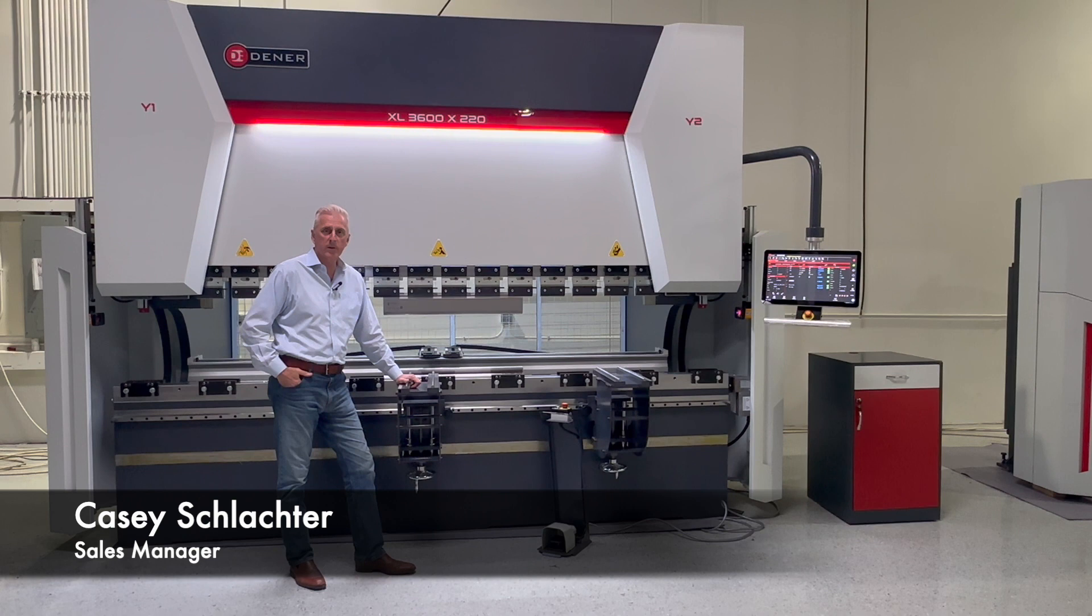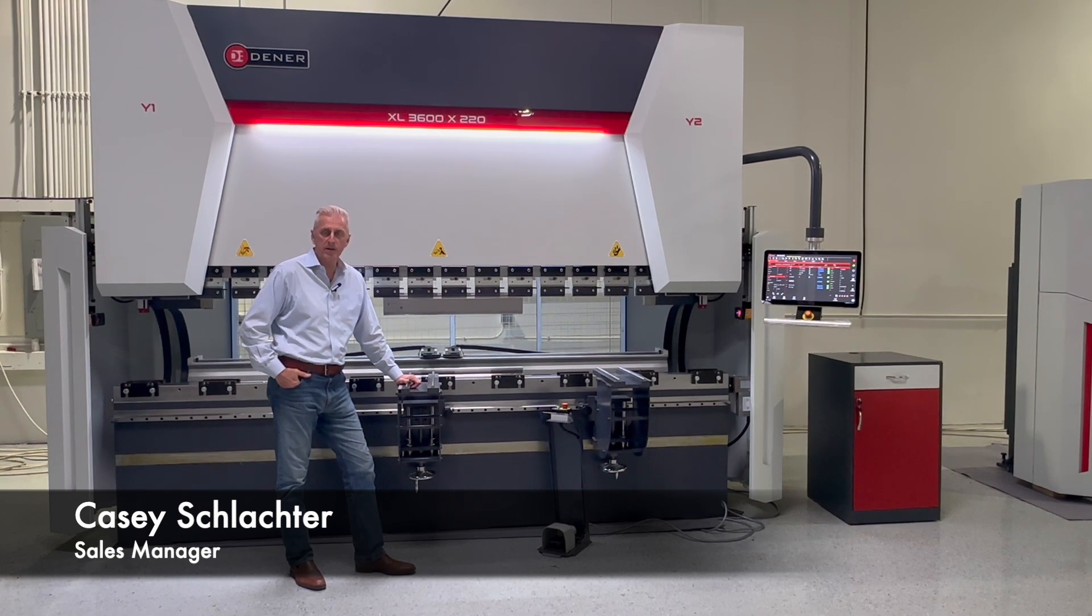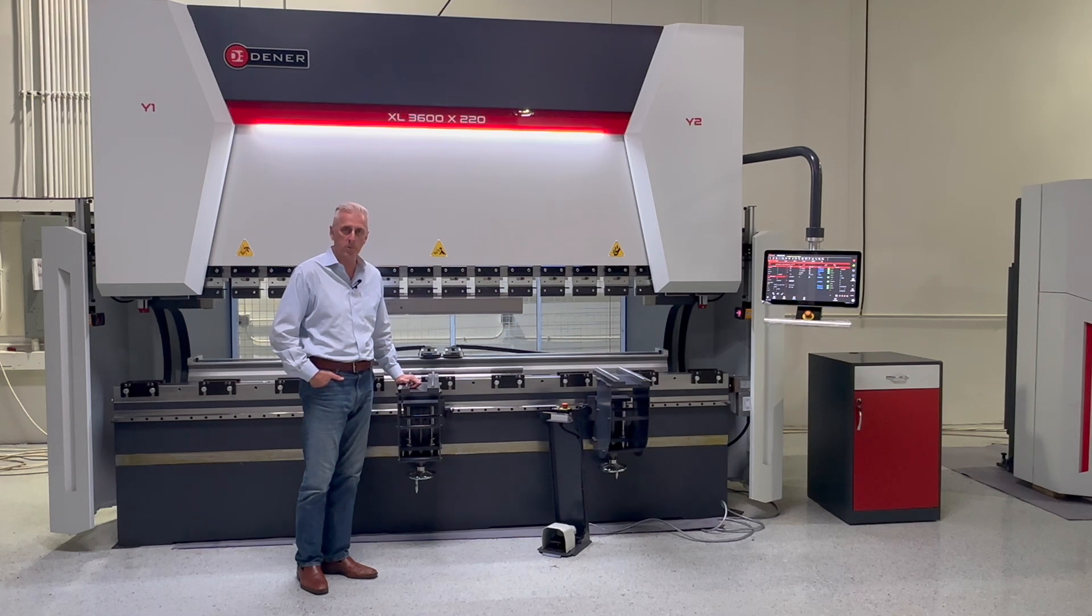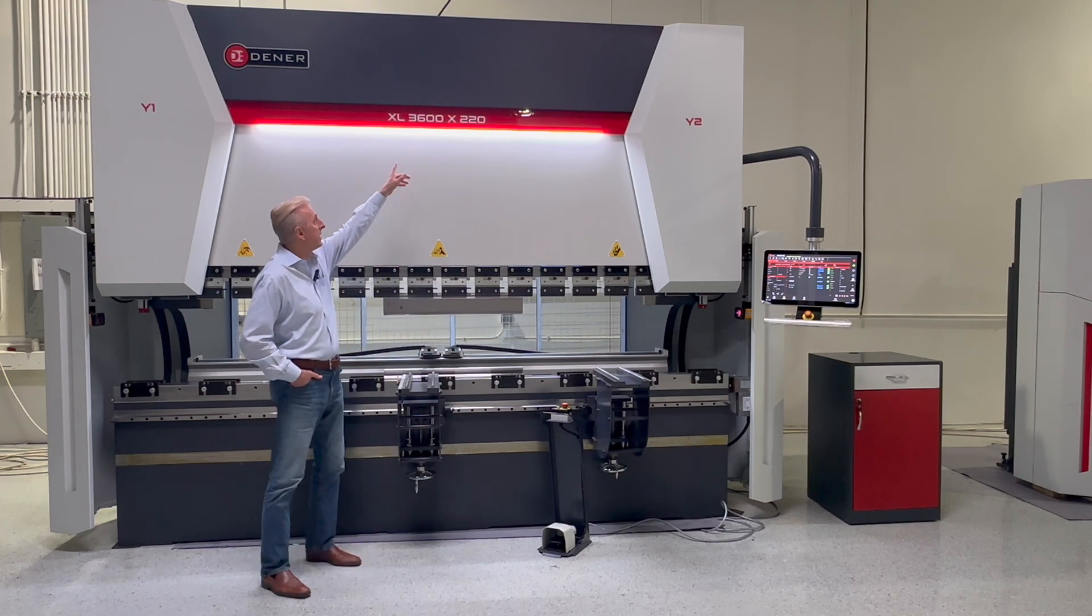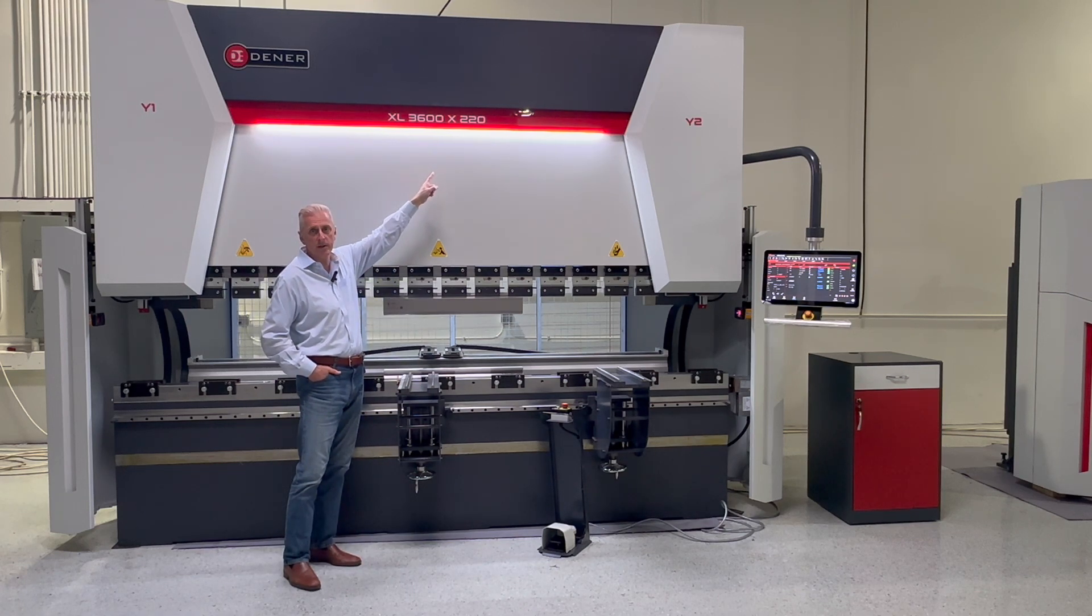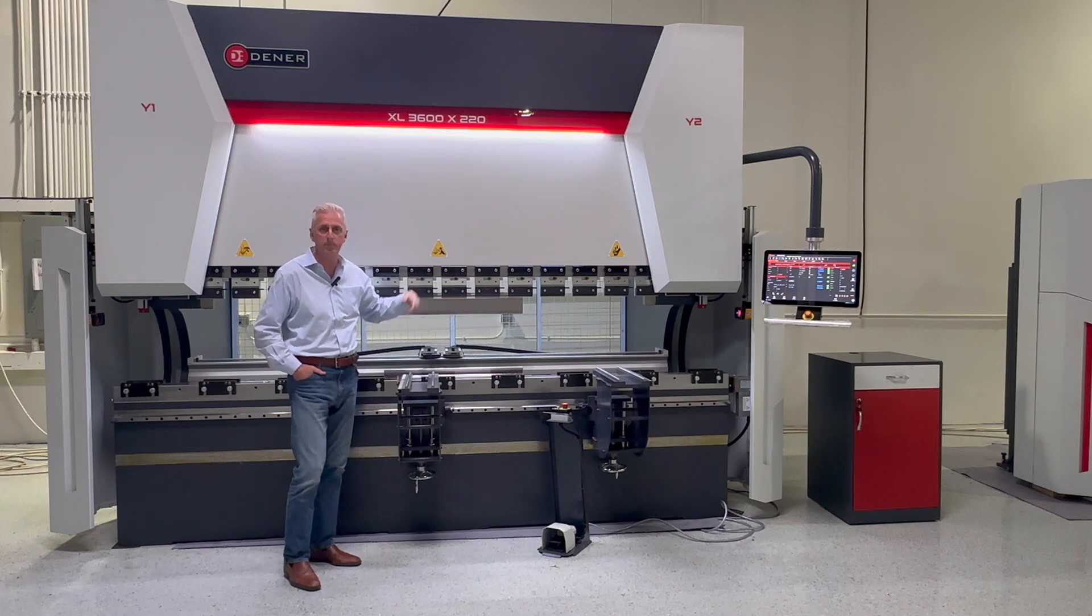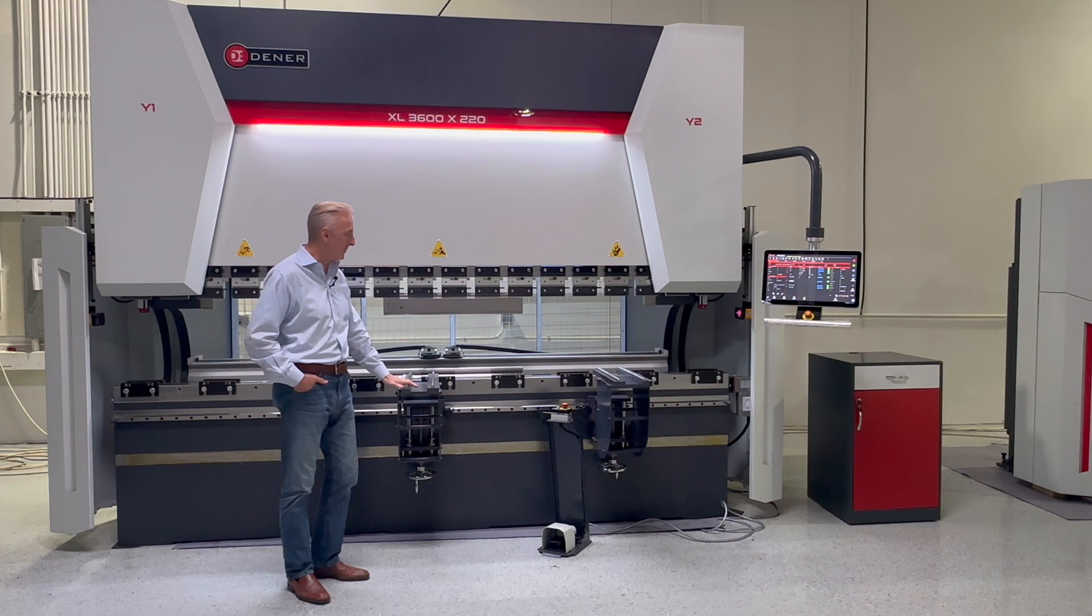Hello, I'm Casey from Denner USA. I'm here today to show you a hydraulic press brake. This is the Puma Series from Denner USA. This happens to be a 3600 millimeter by 220 metric ton press brake, or roughly 12 foot by 250 tons.